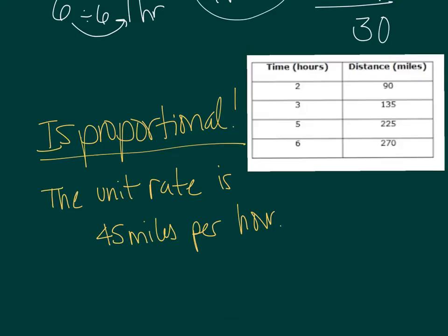As we do a couple more examples, remember that as long as you check every single value in the table — going between the two quantities — if all ratios share a constant unit rate, it's proportional. If there is no constant unit rate, then it is not a proportional relationship.